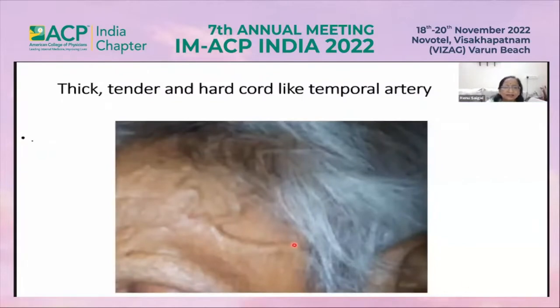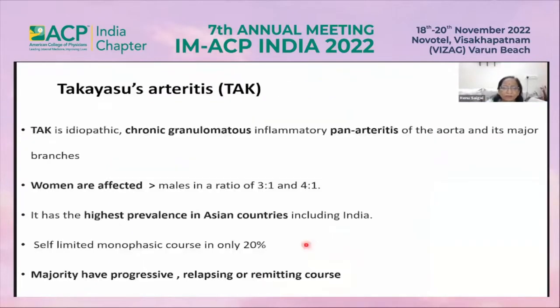This is an image of a thick, tender, cord-like temporal artery in one of my patients. Takayasu arteritis is an idiopathic, chronic, granulomatous, inflammatory panarteritis of the aorta and its major branches.